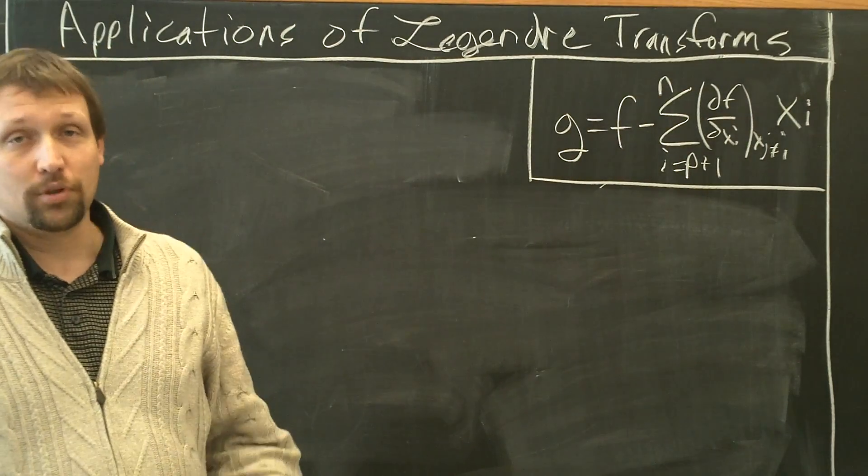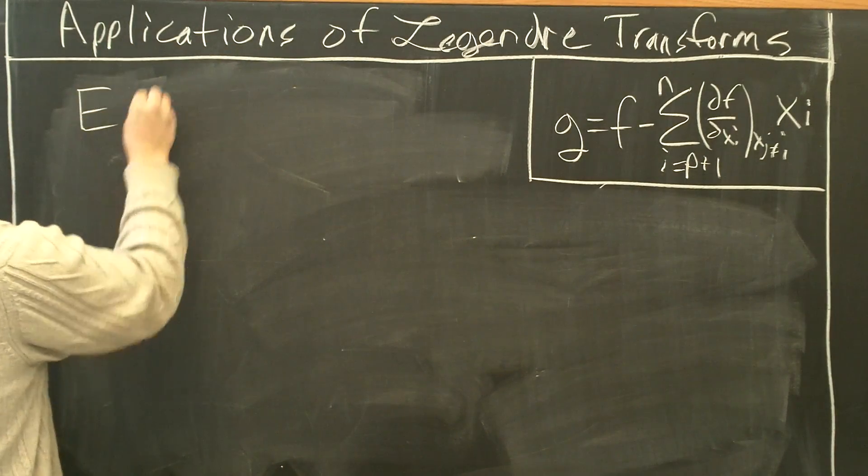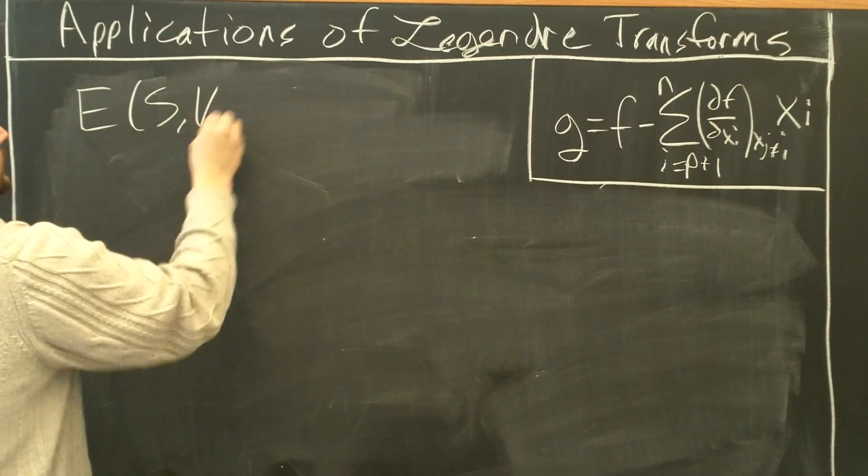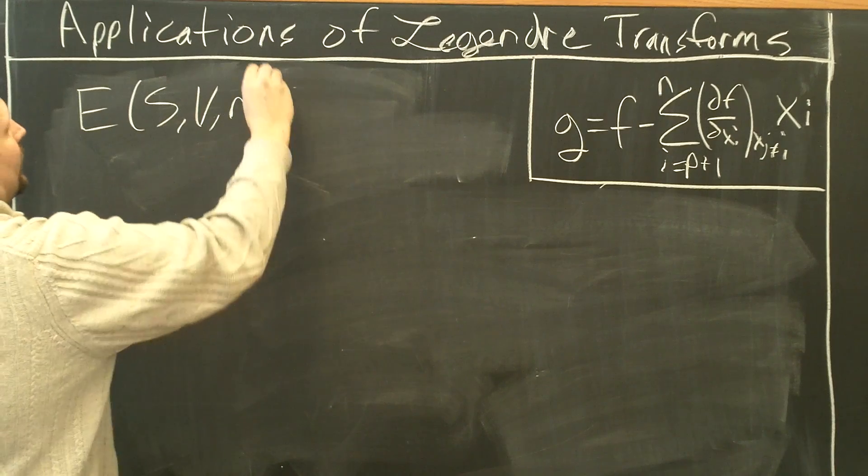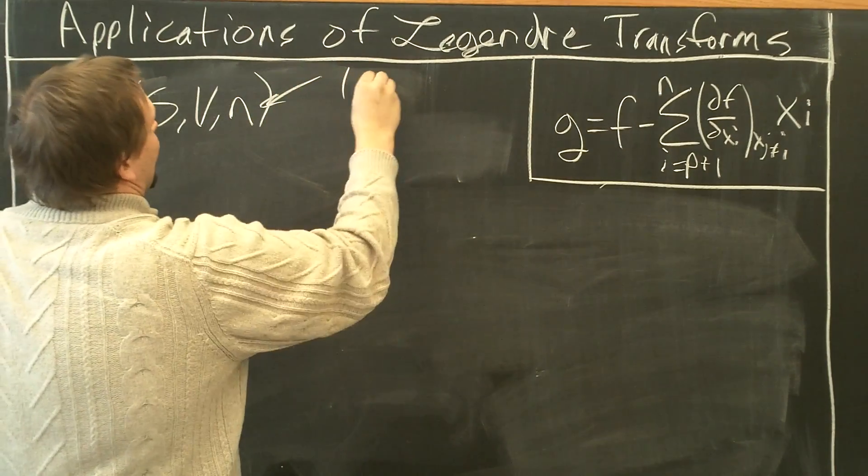Let's apply the Legendre transform one more time, starting with E. So E, as we know by now pretty well, is a function of S, V, and N. I'm just going to have one component here, but you can generalize this to many components.